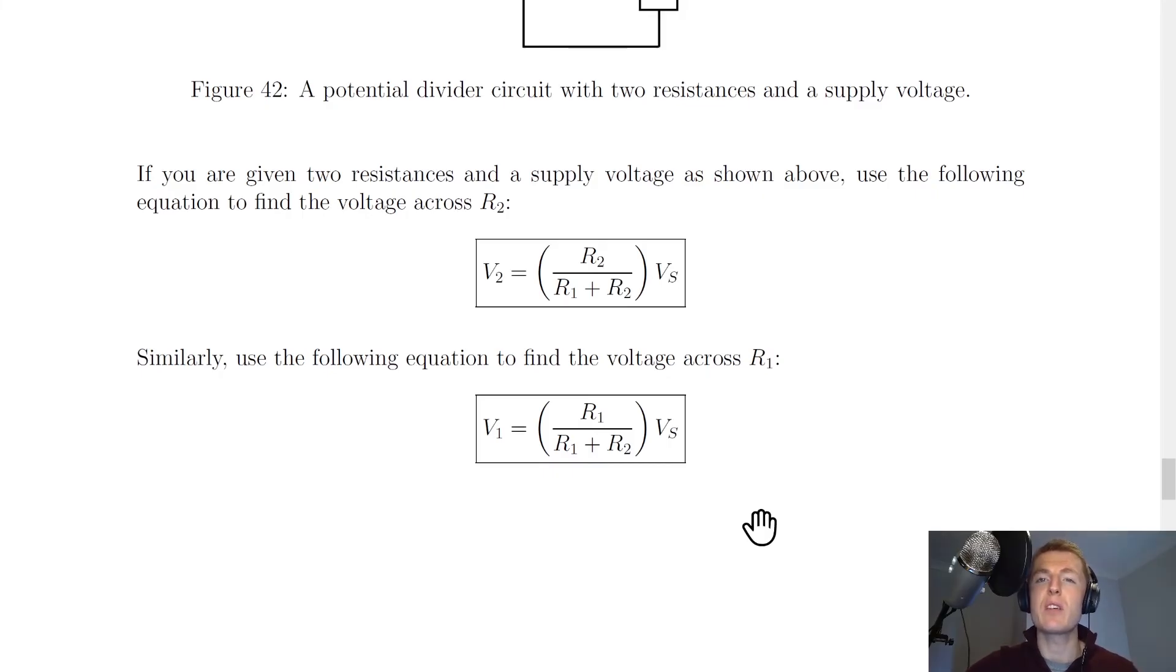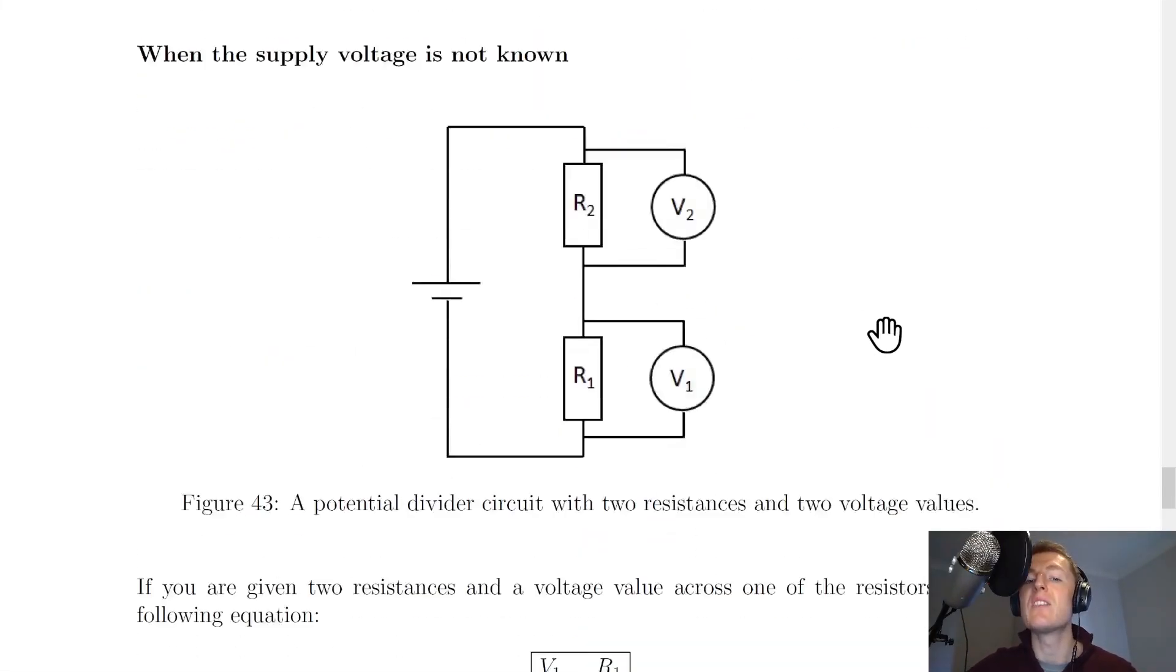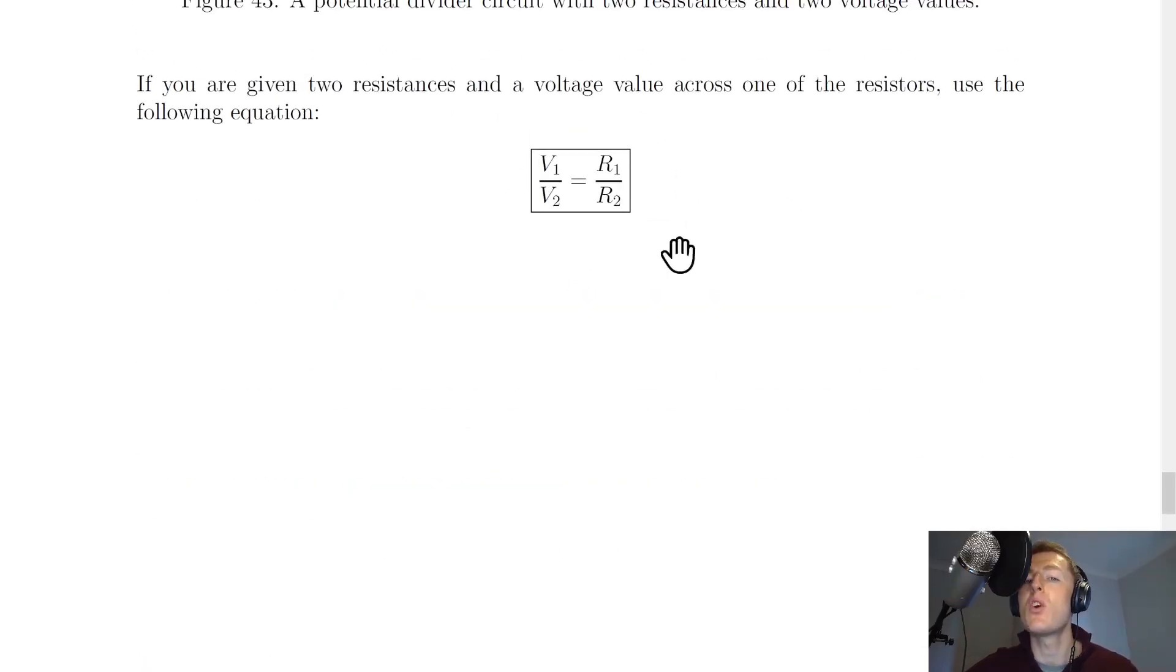So just to summarize, if you want to calculate the voltage across a resistor or a different circuit component in a potential divider circuit, then you can use two equations. The first one is when the supply voltage is known. So you would use one of these depending on whether it was V1 or V2 you were trying to find. And the second one is when the supply voltage is not known, which is V1 over V2 equals R1 over R2. And you'll find both of these equations on the relationship sheet in the exam.